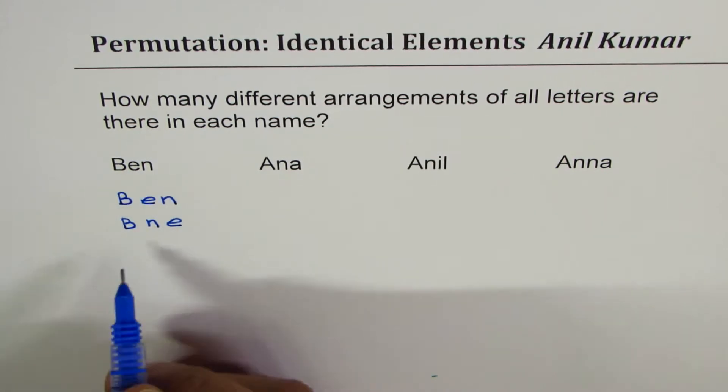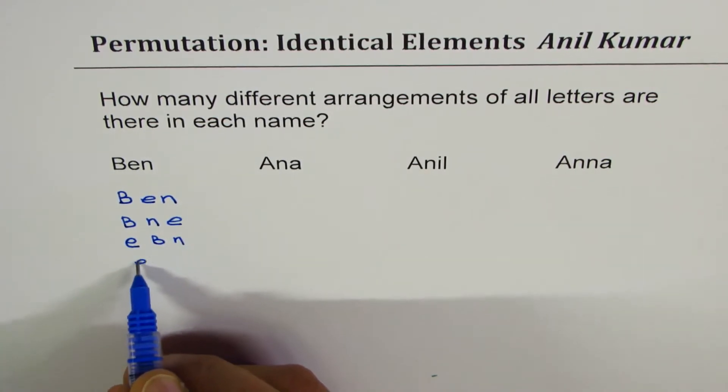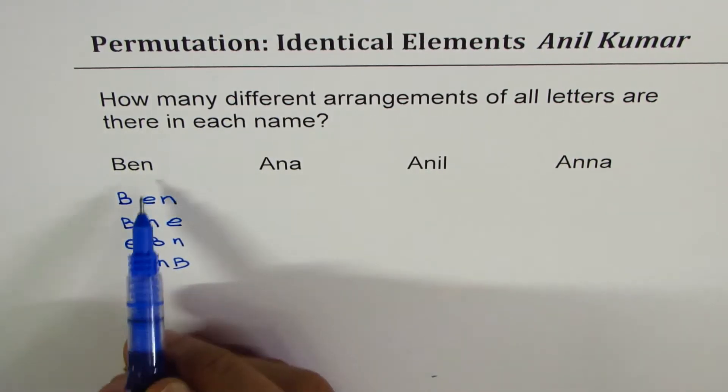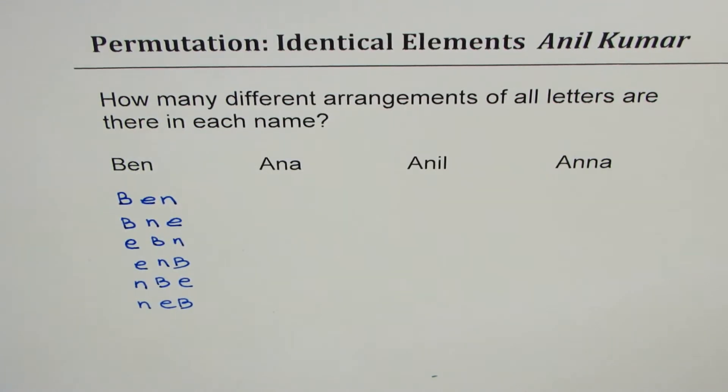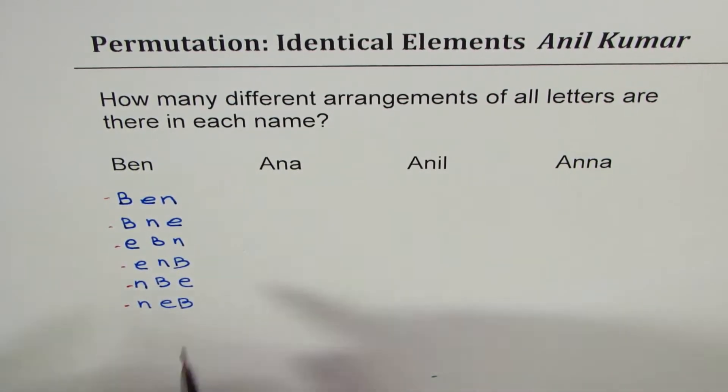Then let's begin with E. If I begin with E, I could write BN or I could write NB. That also gives me two more combinations. Similarly, I could start with N. Starting with N, I could write a word which is NBE or NEB. In all, how many did I get? Let's count. 1, 2, 3, 4, 5, 6. So we have the answer here is 6. We could simply work it out like we have done and get the answer.